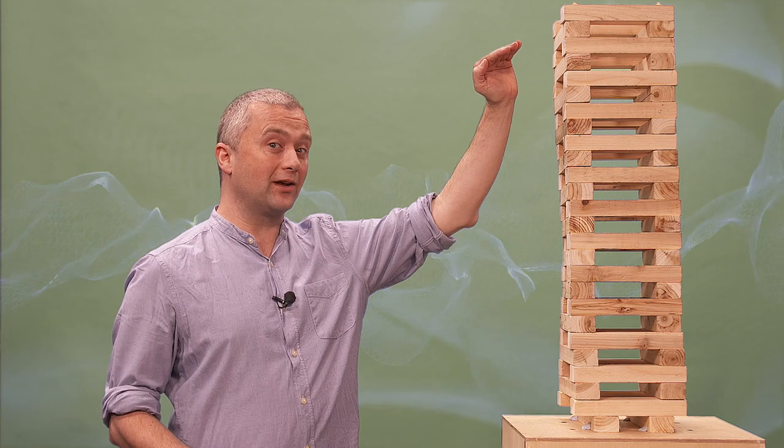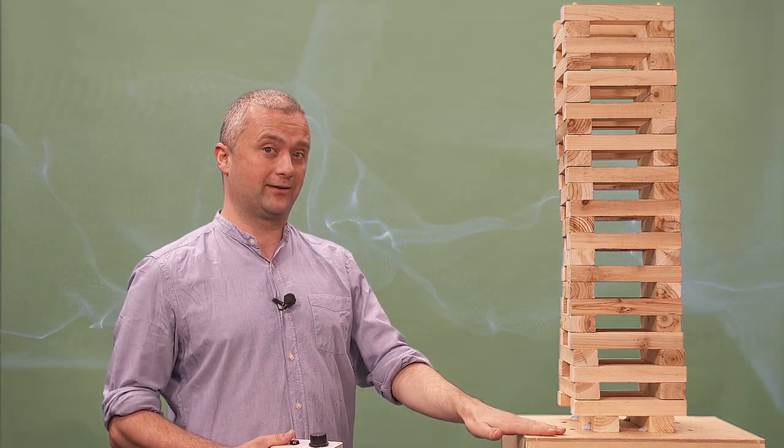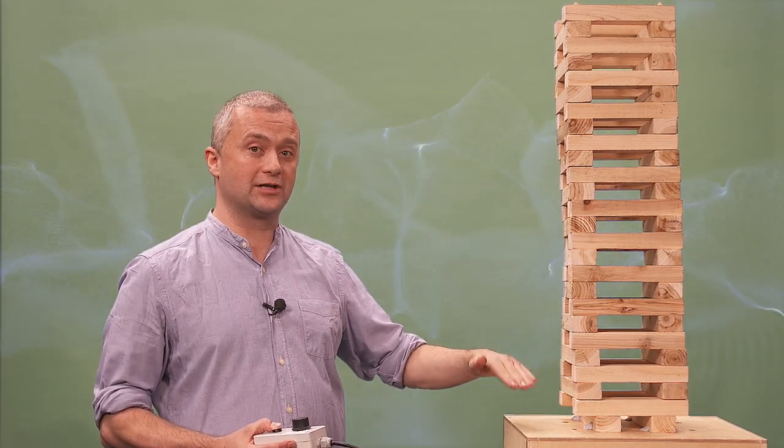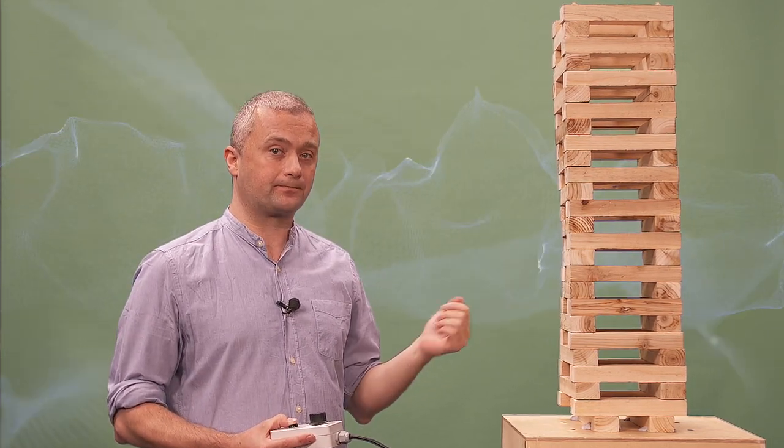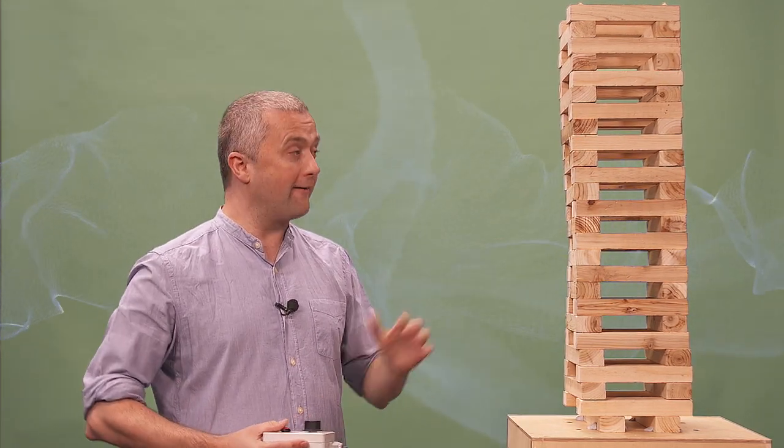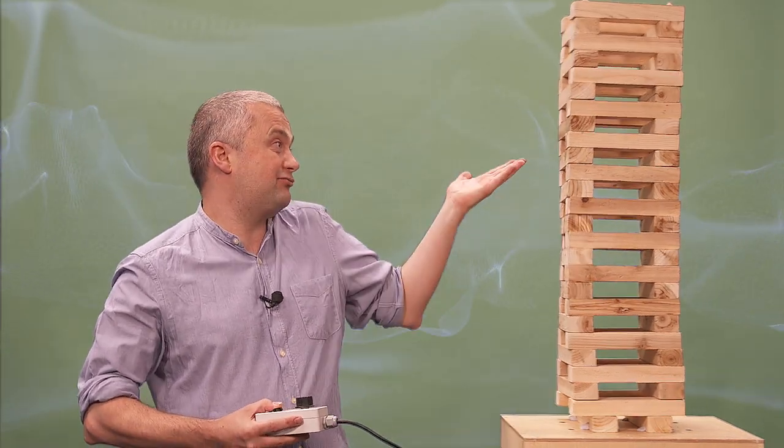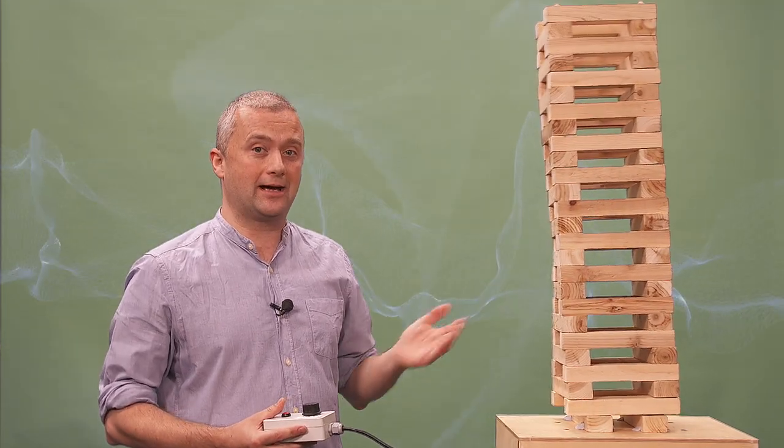This represents a skyscraper and I can make the ground shake at different frequencies. So if I make the ground shake at a lower frequency than the natural frequency of the tower, you can see there's not much response. If I make it shake faster than the natural frequency of the tower, then it's shaking around a bit faster, but it's in no danger of falling down.